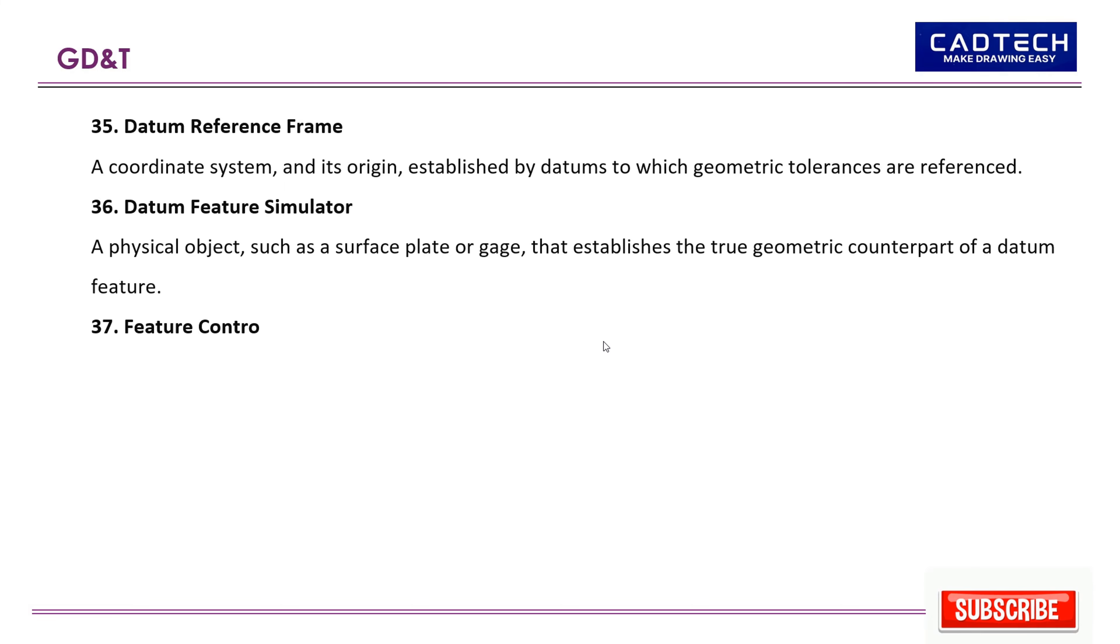37. Feature control frame: A rectangular box containing the geometric characteristic symbol, tolerance, datum references, and any modifying symbols or instructions.